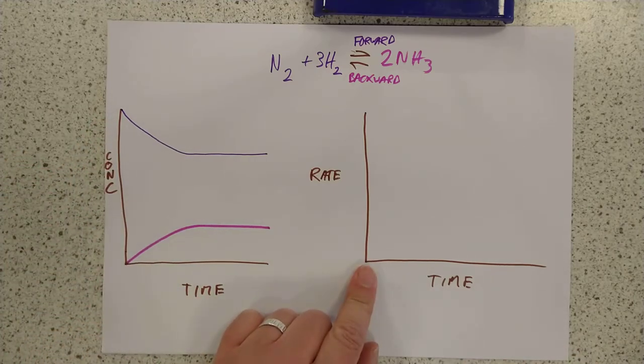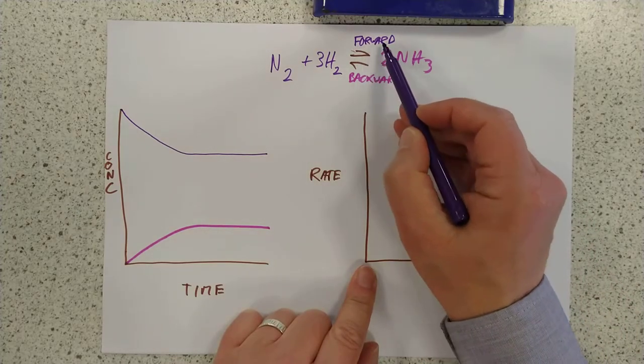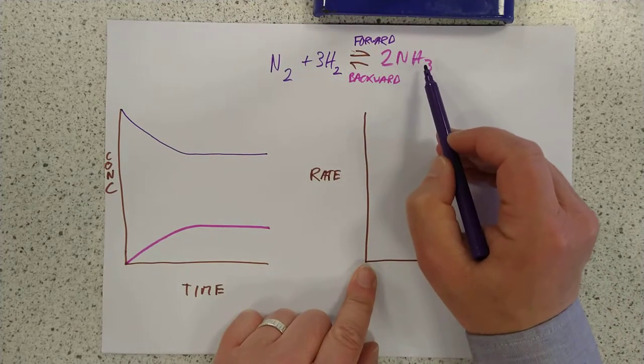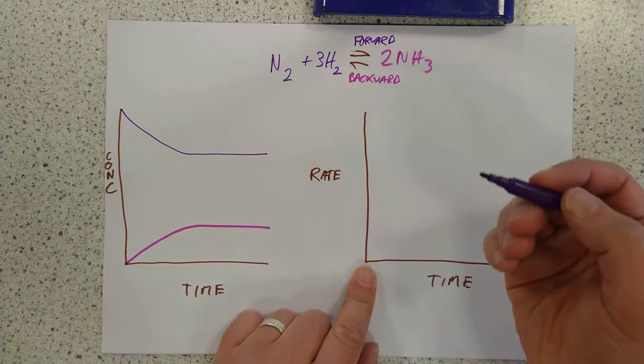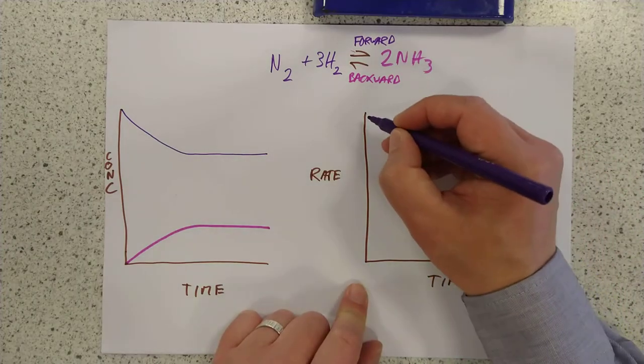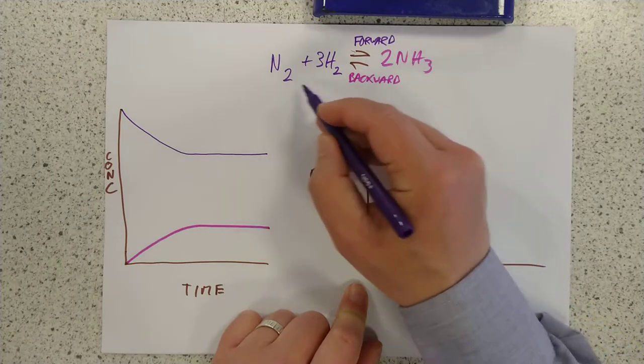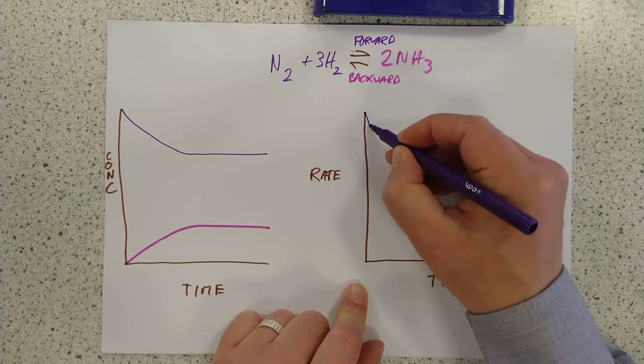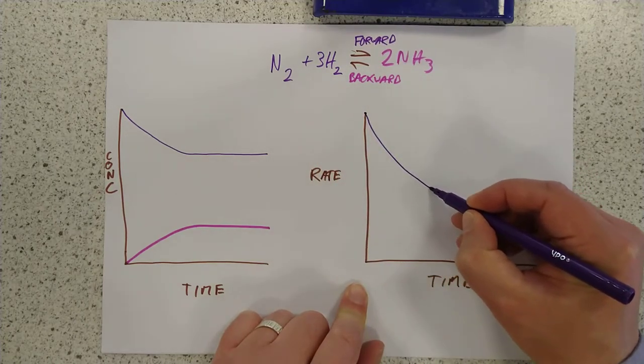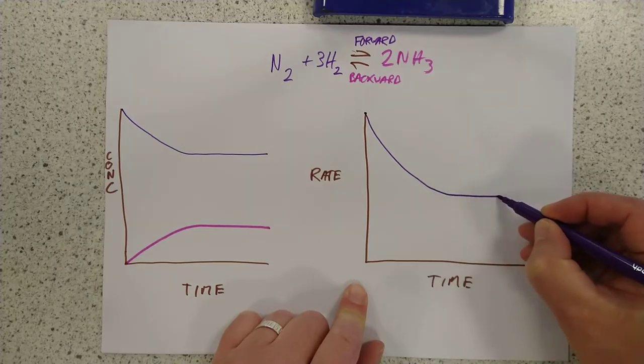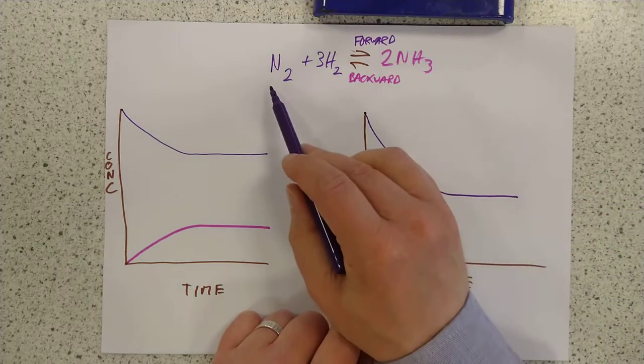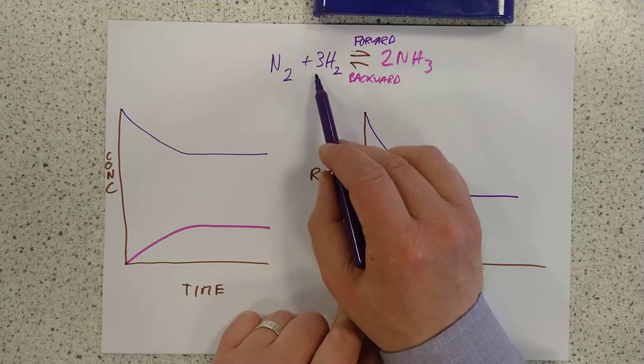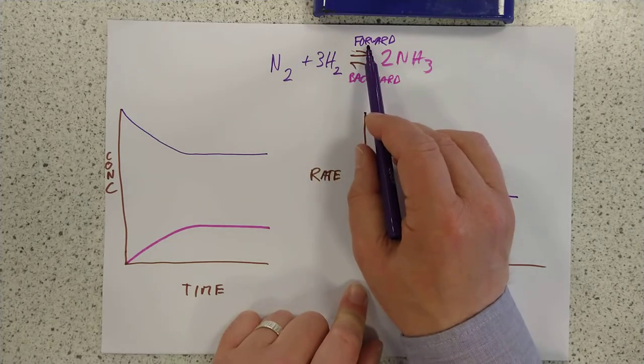I'm going to do it in two different colors. The same two colors, appropriately enough, the forward, what I've called the forward reaction, which is left to right, I'm going to do in purple. And it is going to start very fast, of course, because there's tons of these around, and it's going to fade off and eventually flatten off, because as the concentration of these two decreases, the forward reaction speed decreases.